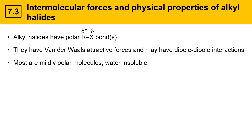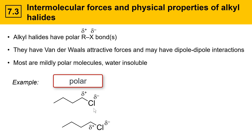Most alkyl halides are mildly polar molecules, and they are water-insoluble. Here's an example: this is 1-chlorobutane, where the carbon is partially positive and the chlorine is partially negative. This molecule has one bond dipole, so it is a polar molecule. If you imagine another one of these molecules close by, the interaction between the partially negative chlorine of one and the partially positive carbon of another leads to an intermolecular force. This is a dipole-dipole type interaction — an attractive force. This is not a hydrogen bond, so it is much weaker than a hydrogen bond, but it's a type of intermolecular force that alkyl halides have.